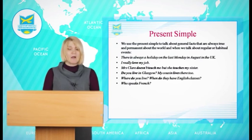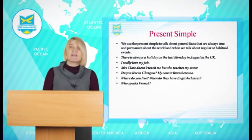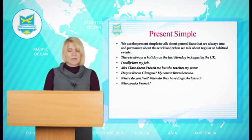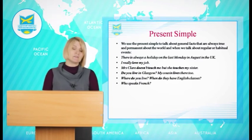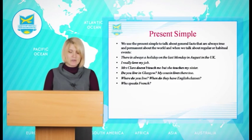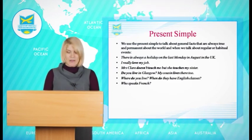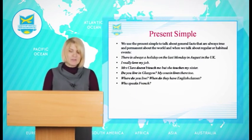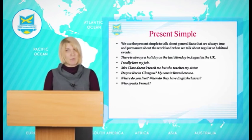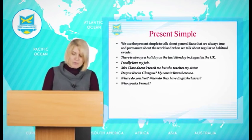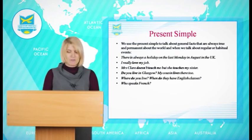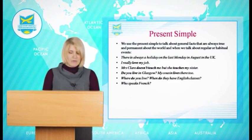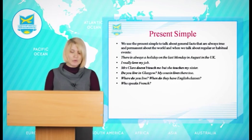We use the past simple for finished events or actions that happened at a definite time in the past. We usually say when they happened using expressions like yesterday, last week, last month, last year, two days ago. Compare: I've been to Spain, but I've never been to Portugal — versus: I went to Spain last year (past simple). Have you ever eaten octopus? Yes, I ate it when I was on holiday last year. Note the difference between 'have been' and 'have gone': Richard's been to Spain means he visited and came back. Richard's gone to Spain means he is there now.